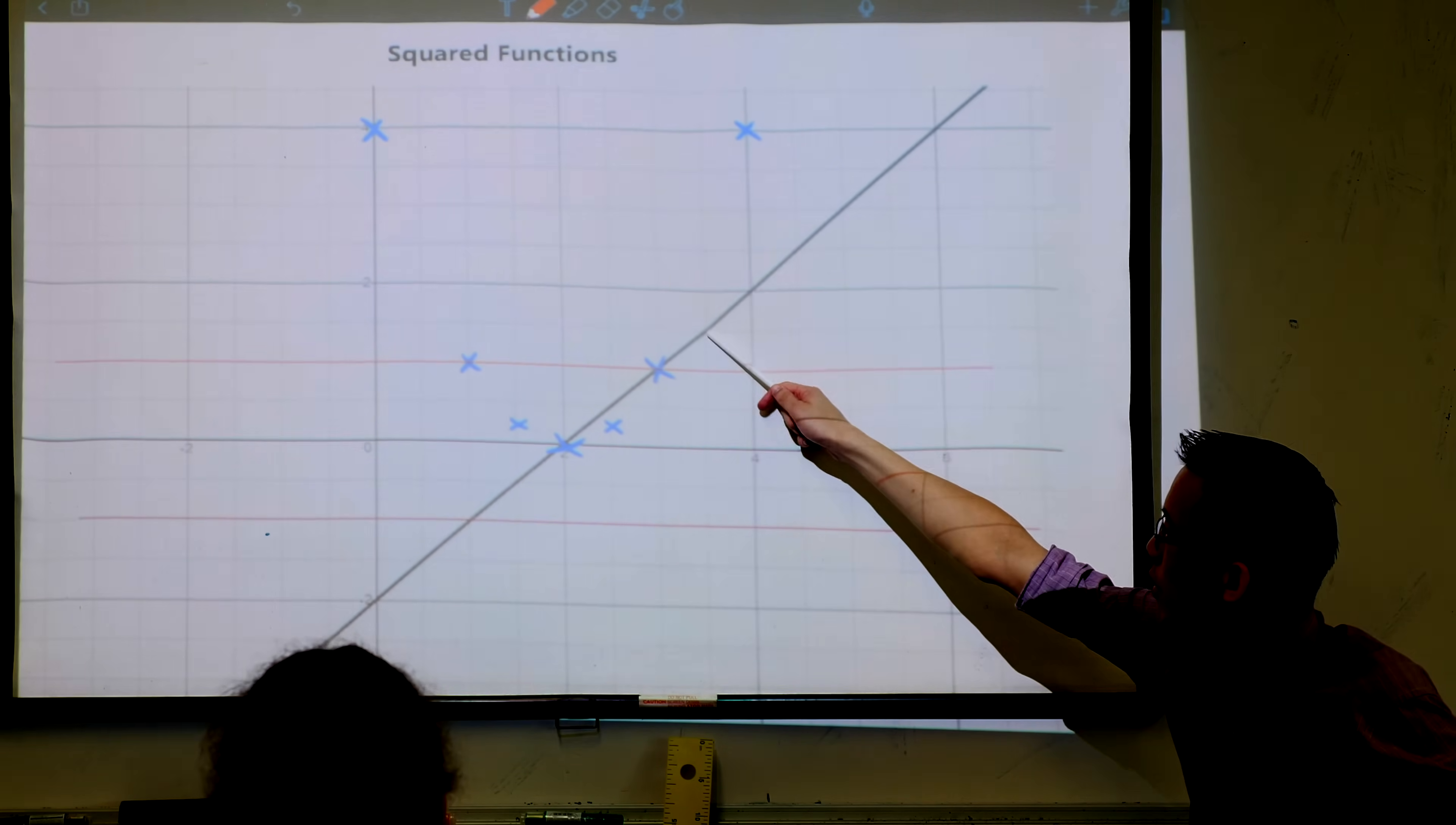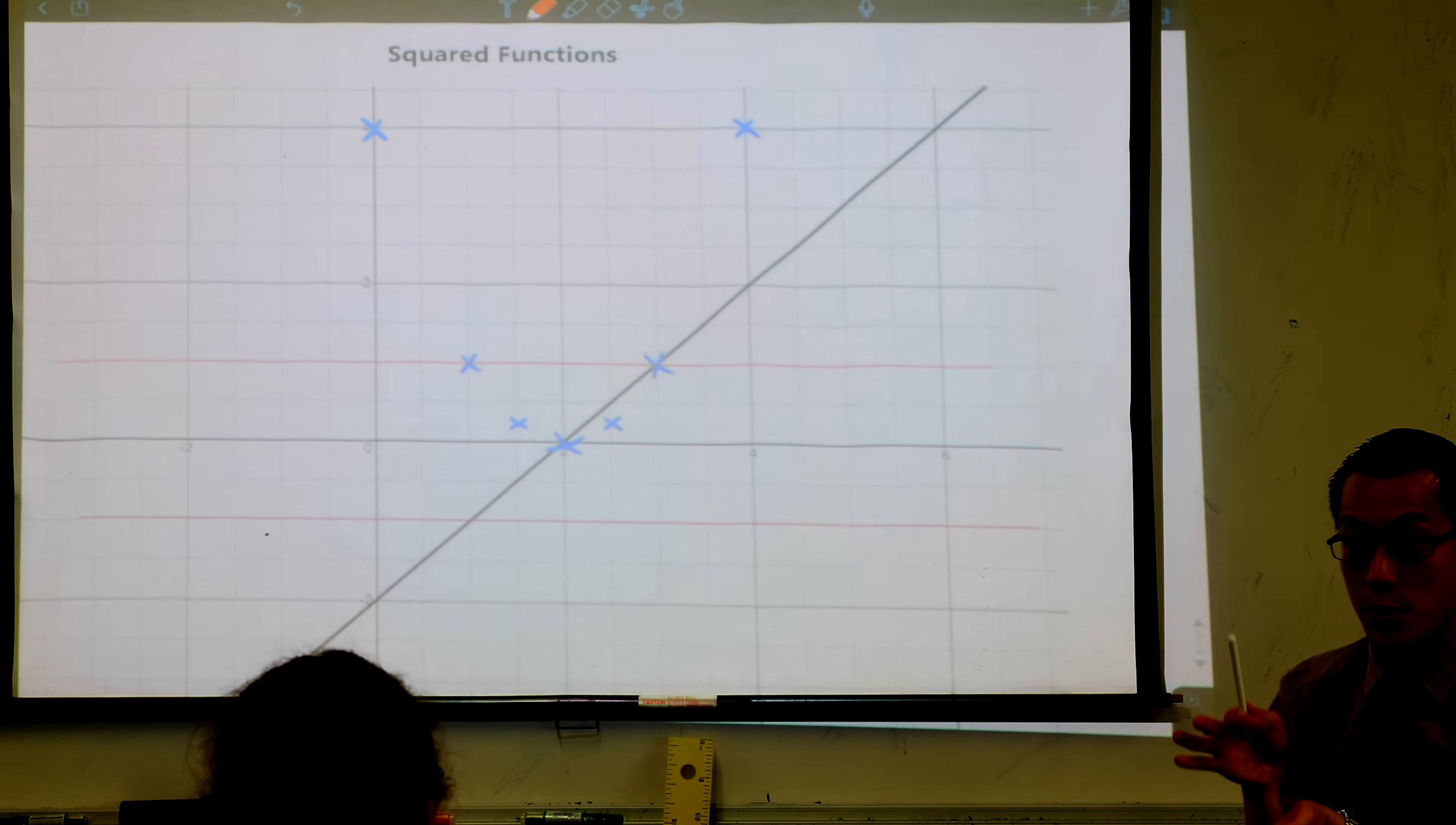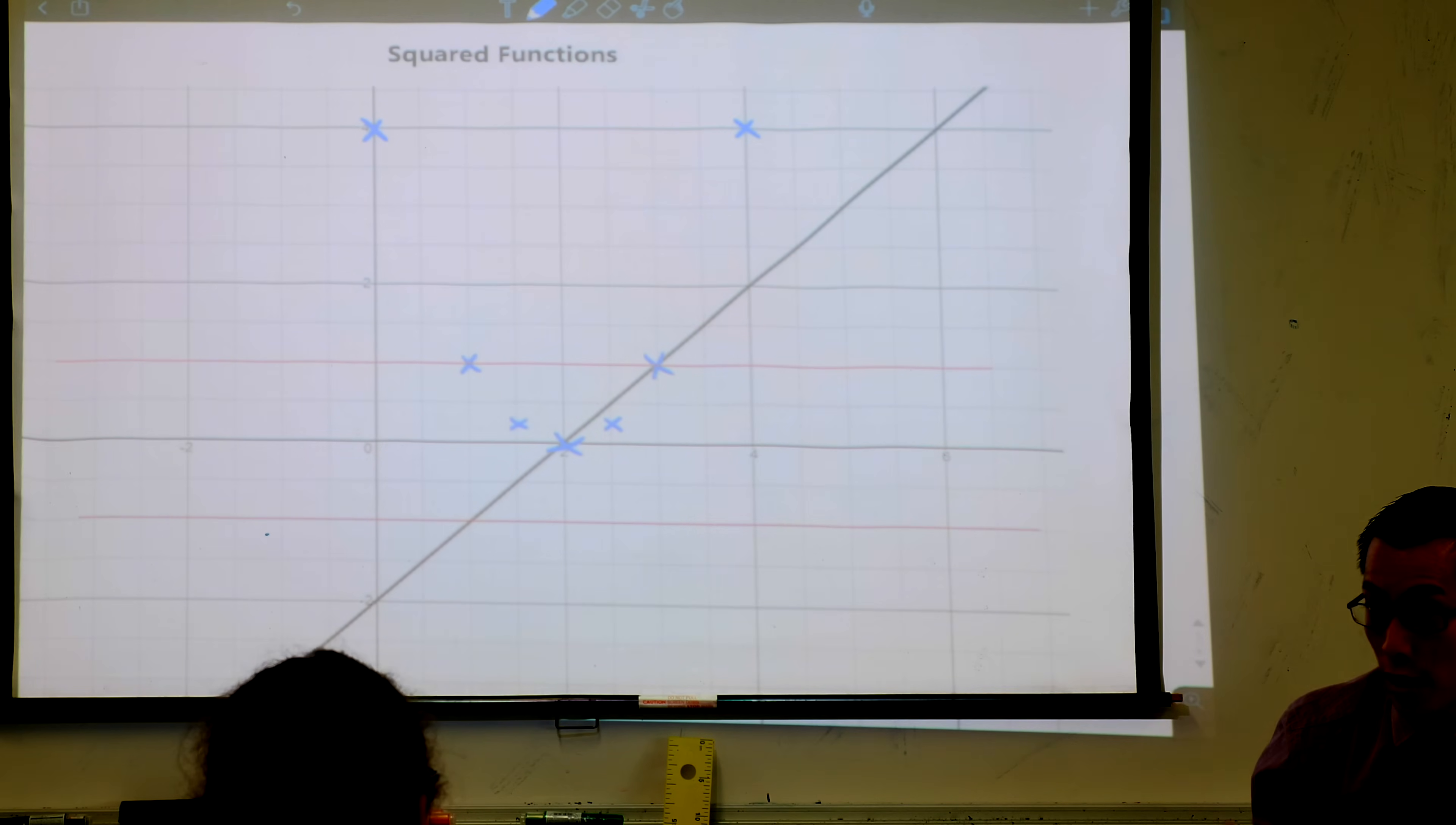This is 1.5. One and a half squared is 2.25, it's up there. Big values get bigger, small values get smaller. As some of you predicted, because this is a straight line, when you square it you're going to get a parabola.